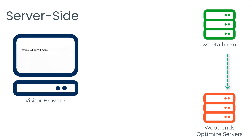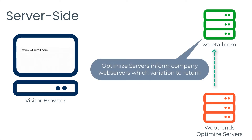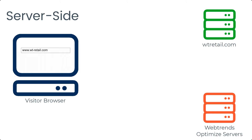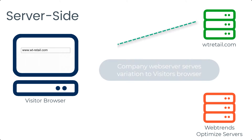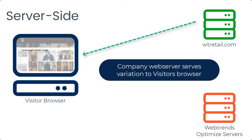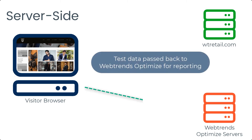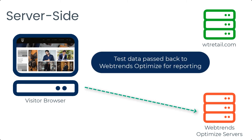This time, however, the Optimize server passes instructions back to the web server and not the client. The web server then passes any page variations onto the client browser. As before, the client browser passes data back to the Optimize server for analysis and reporting.